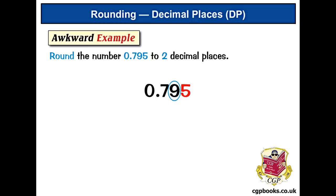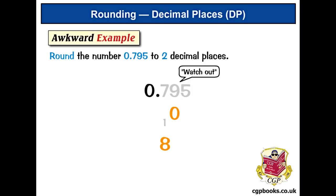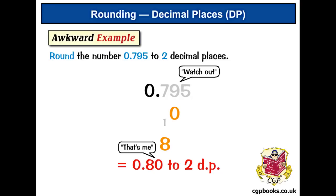Now it's this rounding up of a 9 that's the awkward bit. We can't write 10 in the second decimal place. Instead, we write 0 and carry the 1 across to the first decimal place. So this becomes 7 plus 1, which is 8. So the answer is 0.80. It's very important you remember to write the 0 at the end — otherwise there's only one decimal place and not 2.